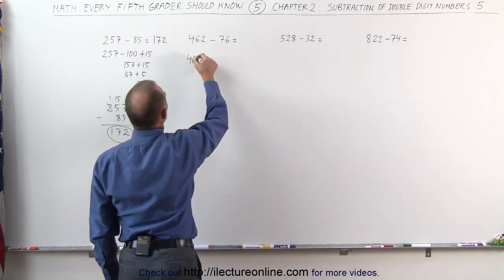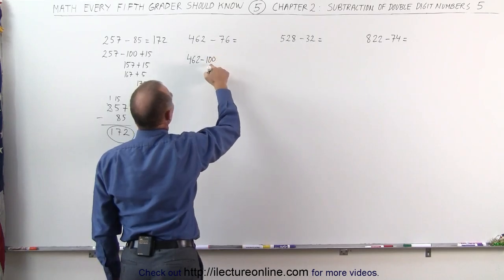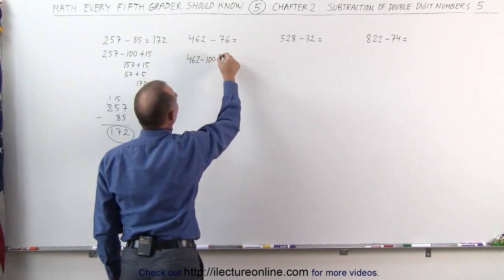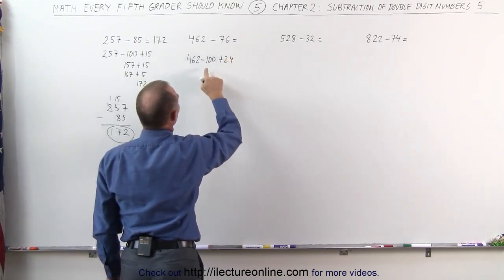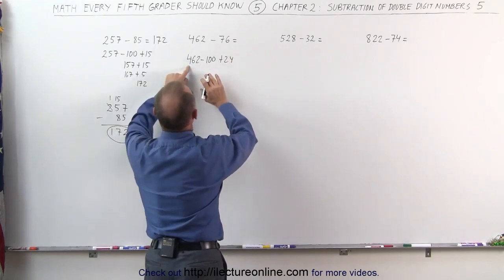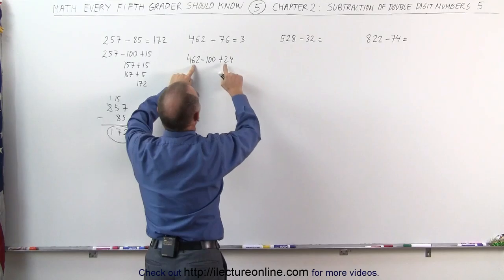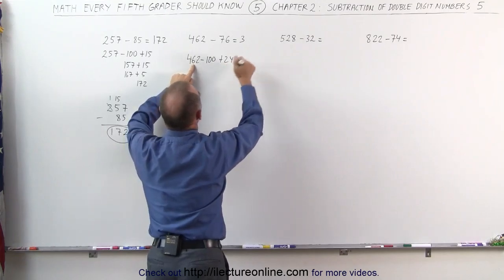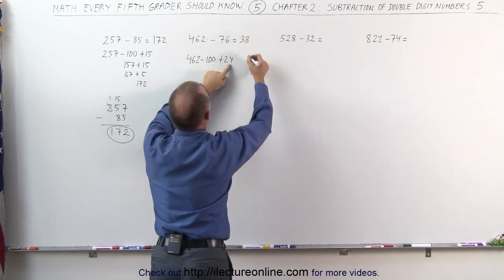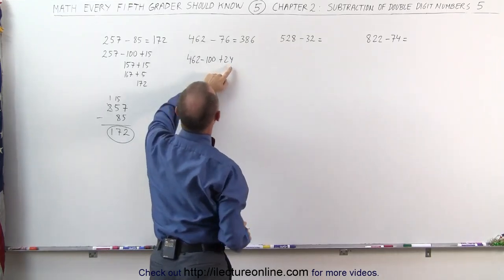I can say that this is 462 minus 100, but I subtracted 24 more than I should, I add the 24 back. This becomes 462 minus 100, that makes it 362, but I have to add another 24 to it, so 6 plus 2 is 8, and 2 plus 4 is 6.